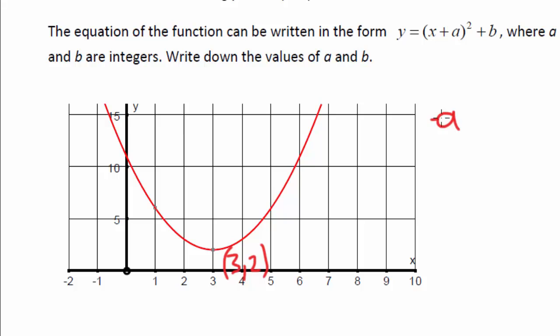So again, remember it's minus a, b, your turning point. So that must mean that a is minus 3, b equals 2. So I could rewrite this out if I can squeeze it down there. y equals x minus 3 squared plus 2. And we're nearly finished.